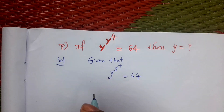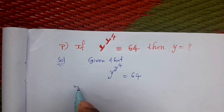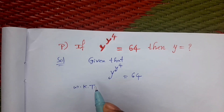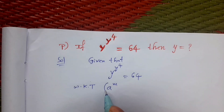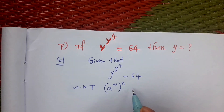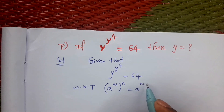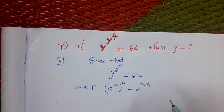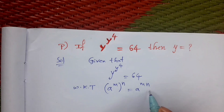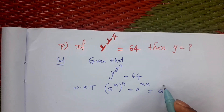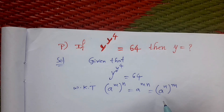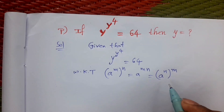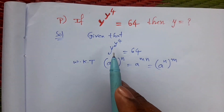We have to use one formula for this simplification. We know that a to the power m, all to the power n, can also be written as a to the power n, all to the power m. Remember this formula for simplification.